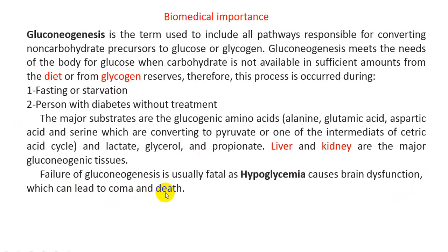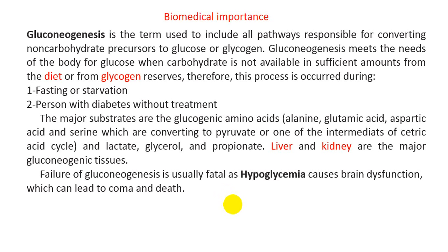Failure of gluconeogenesis, parallel with glycolysis or pentose phosphate pathway, leads to death. For instance, hypoglycemia causes brain dysfunction which can lead to coma or death. Gluconeogenesis and glycolysis are opposite processes and must be regulated very precisely. If there is a failure — for example, missing enzymes, cofactors, coenzymes, or minerals — this will lead to failure of gluconeogenesis, causing coma or death.